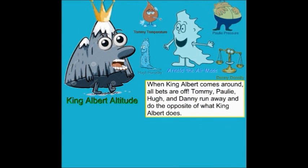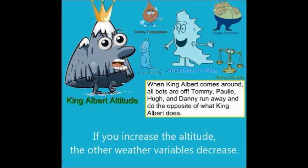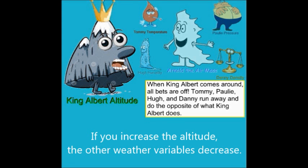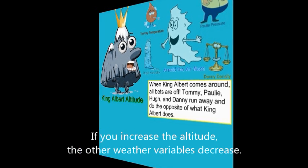Lastly, we have King Albert Altitude. The reason he's the king is that when King Albert comes around, all bets are off. Tommy Temperature, Pauly Pressure, Hugh Humidity, and Danny Density all run away and do the opposite of what King Albert does. So if you increase the altitude, the temperature, humidity, density, and pressure all decrease.